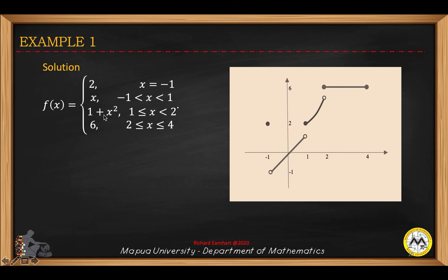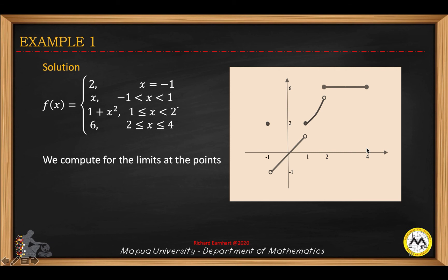When x equals 1, you have y equals 2, and it ends at x equals 2 with value 2 squared plus 1, so y equals 5. From x equals 2 to 4, the function is constant at 6, a horizontal line. Within negative 1 to 4, we have x equals 1 and x equals 2 as our points of discontinuity.